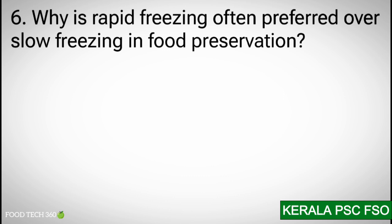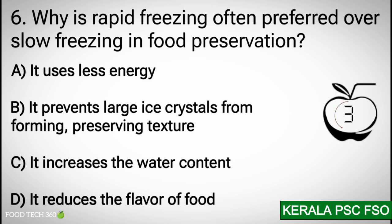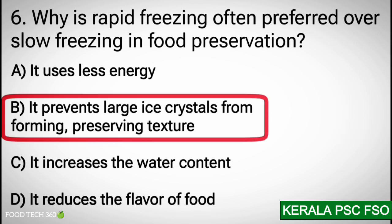Question number 6: Why is rapid freezing often preferred over slow freezing in food preservation? Options: A) It uses less energy, B) It prevents large ice crystals from forming, preserving texture, C) It increases water content, D) It reduces the flavor of food. Correct answer: B) It prevents large ice crystals from forming, preserving texture.